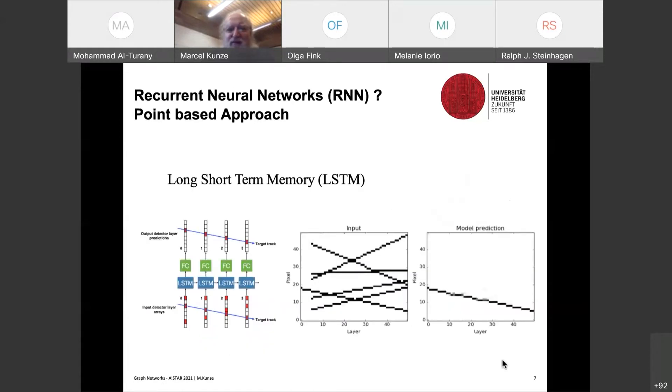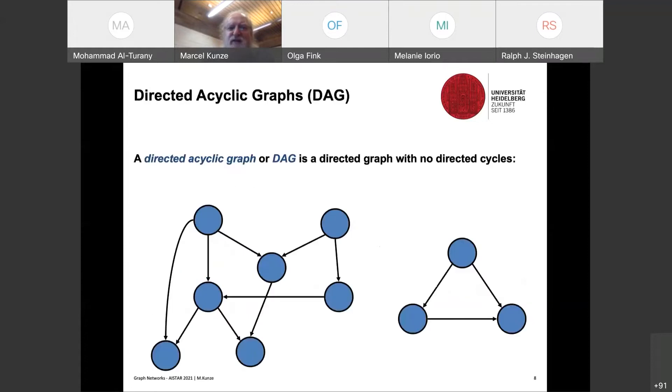Then you could use recurrent neural networks where you have LSTM based approach here. The idea is to have a more or less local approach that you try to connect the dots in different layers and then have a local approach to the problem. And you would come up with different solutions. If you have the input here and output, you would then come up with the model prediction, which is a straight track in this case. Also, these point based approaches are not working satisfactorily in the case of high luminosity LHC. The problem is that we have a very high density of dots. So here we have the problem that these local approaches, they would just be confused by neighboring dots and you would not come up with single identified tracks.